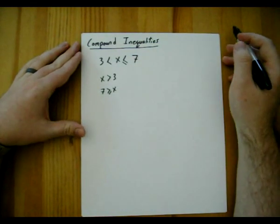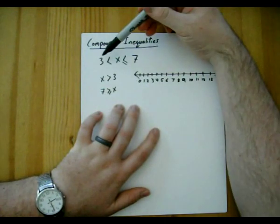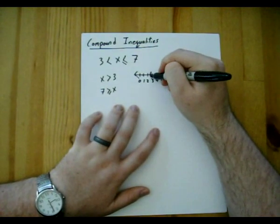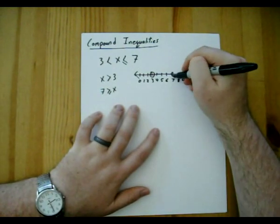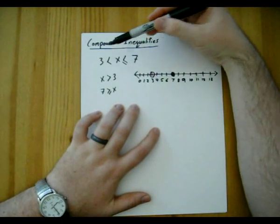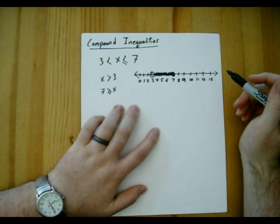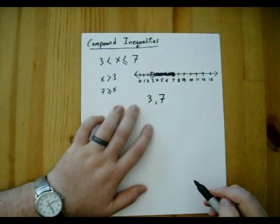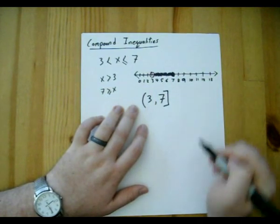To do this we need a number line. We look at the leftmost place, which is 3 — that's an open circle because it's a strictly less than symbol. Then we look at the rightmost endpoint, which is 7 — that's a closed circle because of the equal to part. We're talking about the numbers in between those two, so we fill in the in-betweens. In interval notation: 3 is the leftmost endpoint with an open bracket since it's not included, and 7 is the rightmost endpoint with a closed bracket since it is included. The answer is (3, 7].